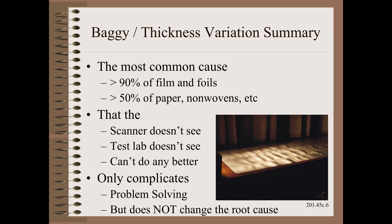The root cause of most bagginess is winding a web that has a variation of thickness across the profile — in other words, winding a web with poor gauge profile. The size of the gauge variation is very likely frighteningly small: so small that we might not be able to measure it with convenient gauging systems or even test labs. That we can't easily measure variation that small does not change the root cause. That we can't easily control the variation that small does not change the root cause. Wishful thinking simply has no place in problem solving.